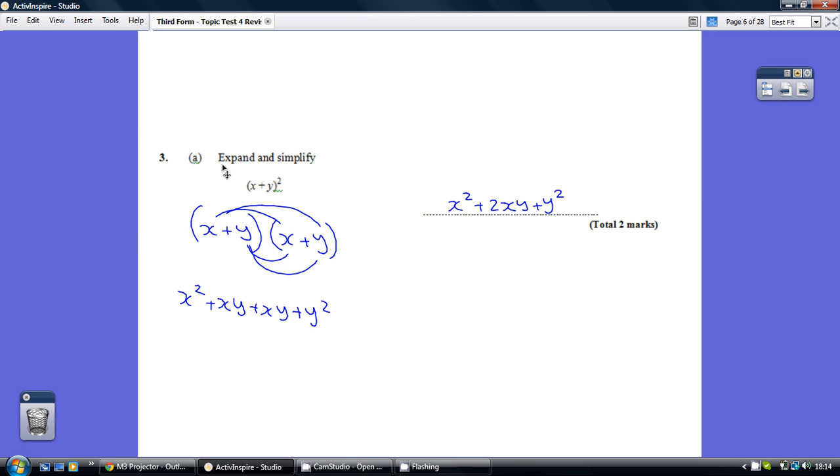So we've expanded, we've got rid of the brackets, and the simplifying is just gathering up the xys. There are two of those in the middle, so we've got x squared plus two lots of xy plus y squared.